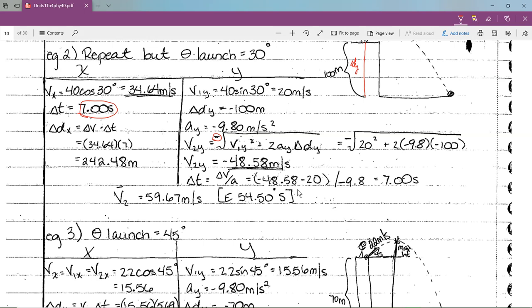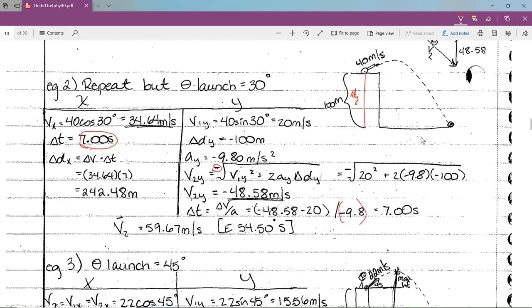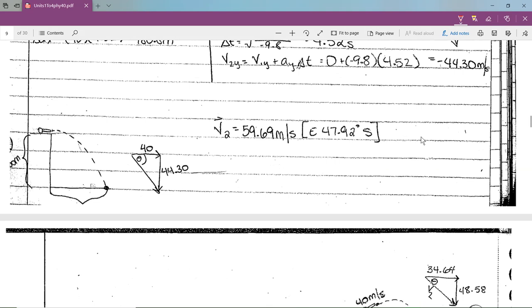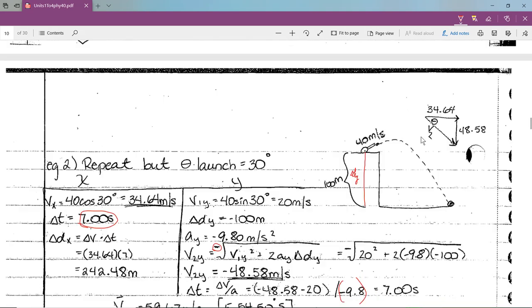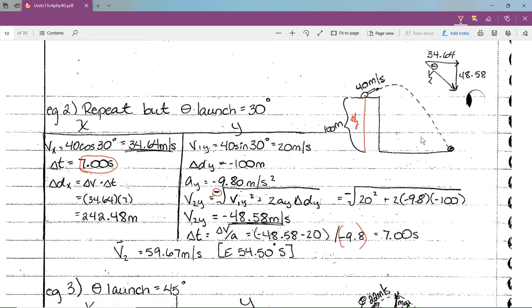To get delta t, acceleration is change in velocity over change in time. So minus 48.58 minus 20 all divided by negative 9.8. The cannonball is in the air longer than it was if you just did a straight horizontal cannon. It's seven seconds. My delta dx is vx delta t, so 34.64 times seven seconds, 242.48 meters.